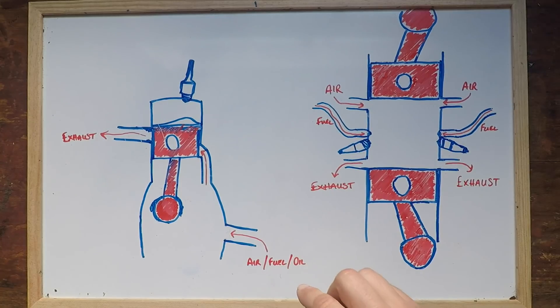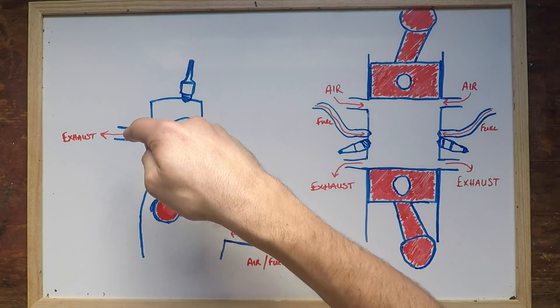But because we've now got oil inside the fuel, we get that horrible nasty blue smoke coming out the exhaust pipe when the piston moves down and opens that port.